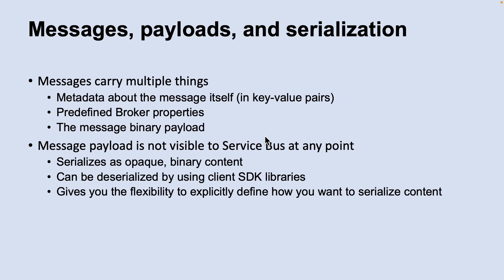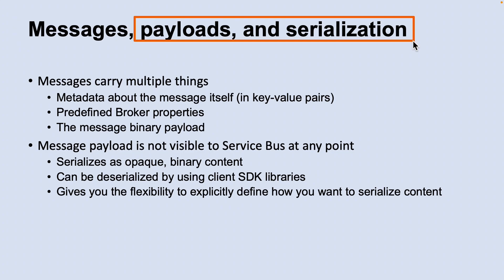Now let's look into messages, payloads, and serialization. Messages carry a payload and metadata in the form of key-value pair properties describing the payload and giving handling instructions to the Service Bus and applications. When in transit or stored inside Service Bus, the payload is always an opaque binary block. The content type property enables applications to describe the payload. When using the legacy Simple Network Management Protocol, or SBMP, objects are serialized with the default binary serializer or with a serializer that is externally supplied.